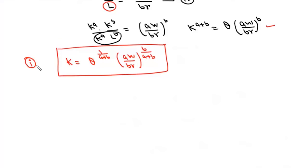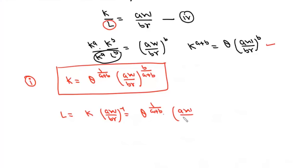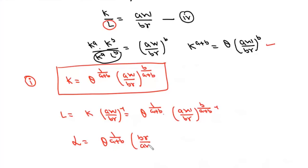We also find the cost-minimizing input of labor. Since K/L = aw/(br), we write L = K * (br/(aw)). Substituting the expression for K, the cost-minimizing labor is L = q^(1/(a+b)) * (br/(aw))^(a/(a+b)).